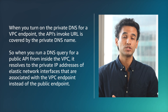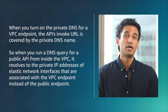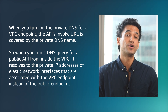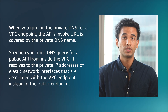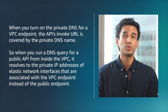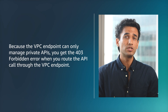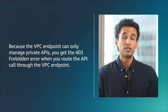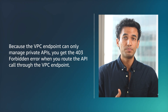When you turn on the private DNS for a VPC endpoint, the API's invoke URL is covered by the private DNS name. So when you run a DNS query for a public API from inside the VPC, it resolves to the private IP addresses of elastic network interfaces that are associated with the VPC endpoint instead of the public endpoint. Because the VPC endpoint can only manage private APIs, you get the 403 forbidden error when you route the API call through the VPC endpoint.